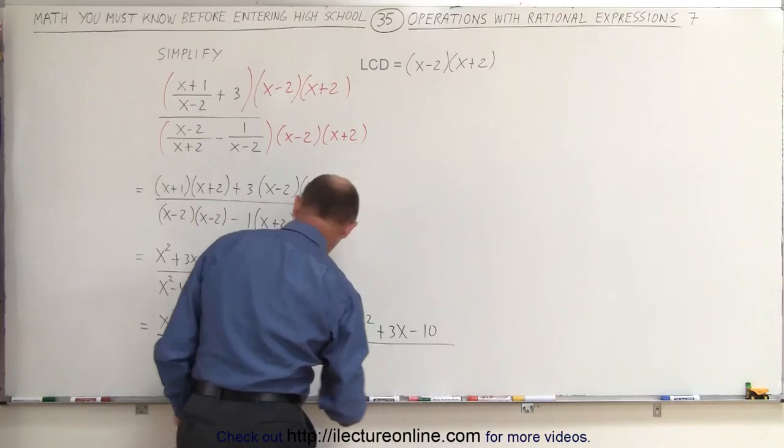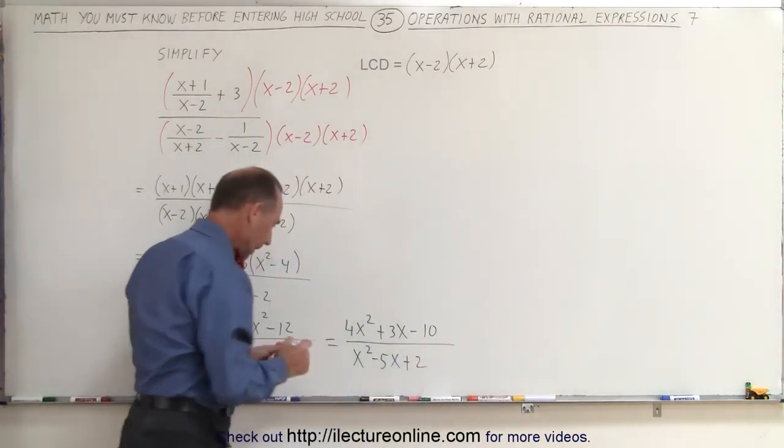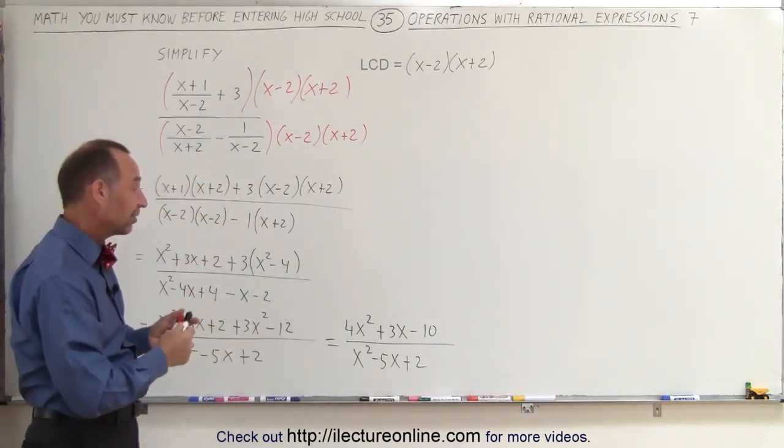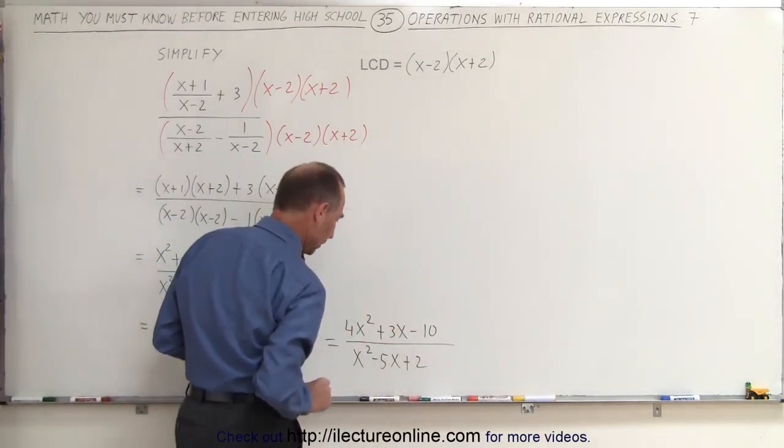So when we divide that by the other denominator, x squared minus 5x plus 2, the only thing we potentially could do if possible is factor that out, but I don't believe we can factor the denominator, and it doesn't look good for the numerator either.